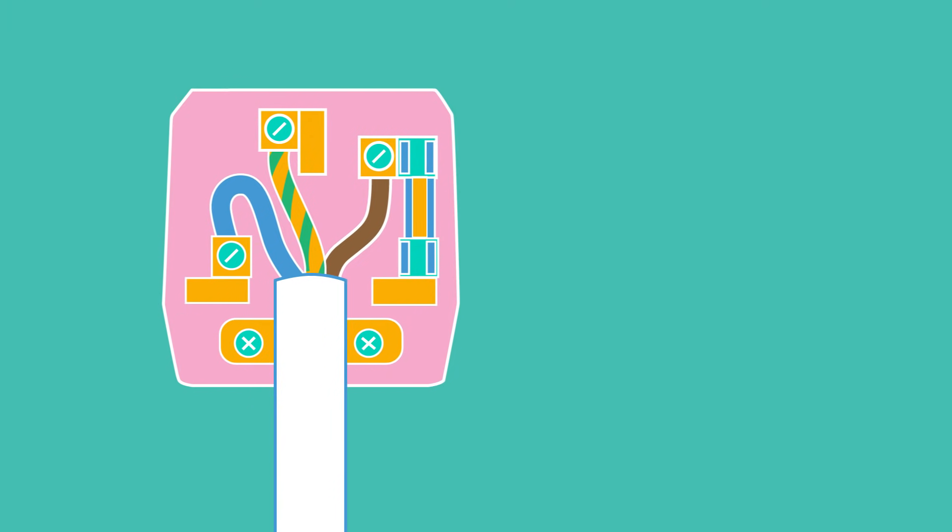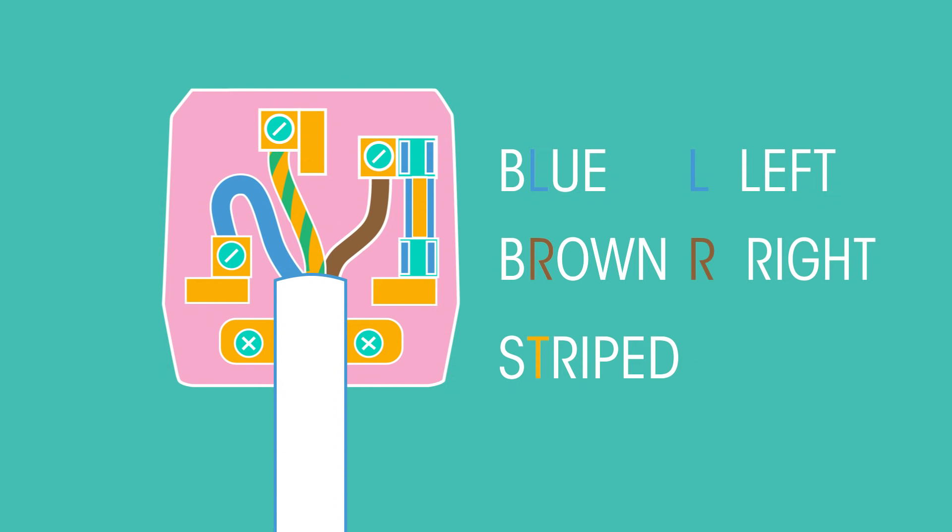There is a really easy way to remember where each wire goes. Take the second letters of the colors. Blue, L, left. Brown, R, right. Striped, T, top.